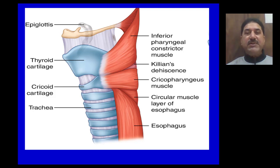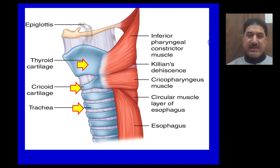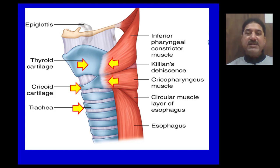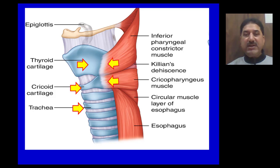The cartilages associated with the thyroid gland are the thyroid cartilage, cricoid cartilage, and tracheal rings. The muscles associated with the movements of these cartilages are thyropharyngeus and cricopharyngeus, which are basically parts of the inferior constrictor muscle of the pharynx, attached to the thyroid cartilage and cricoid cartilage respectively.